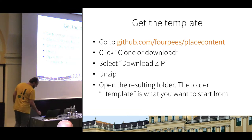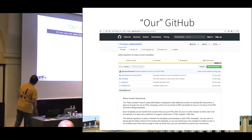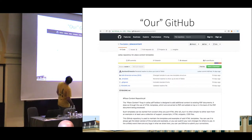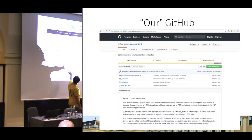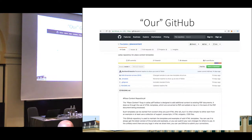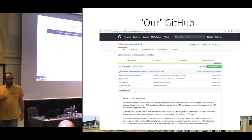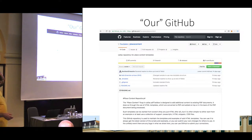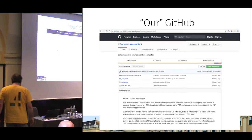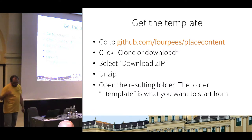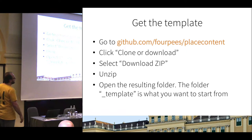If you go there with your computer open, you get to see more or less this. The easiest way to get something from it is the clone or download button — the big green button. Clone or download lets you download whatever is in the repository to your own machine. You can select download ZIP, it will download and unzip to a folder. In that folder there are, at the moment, two things.